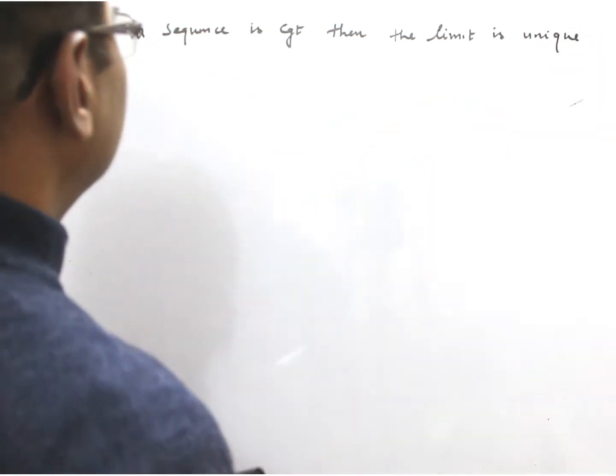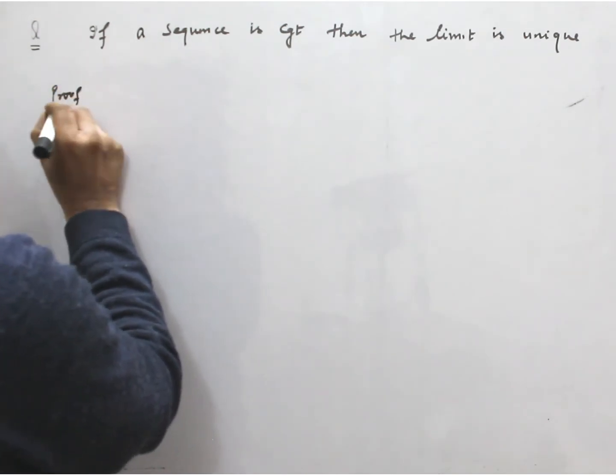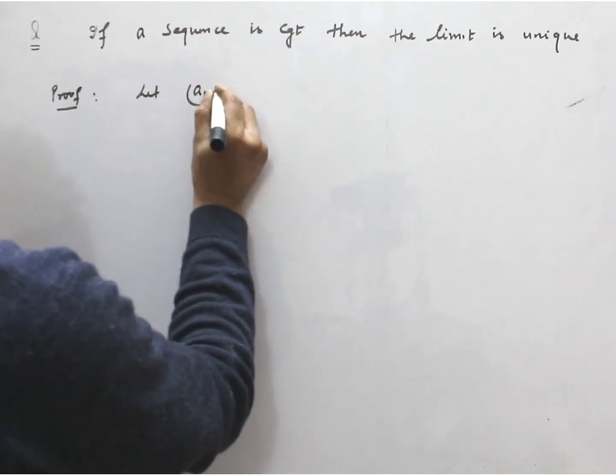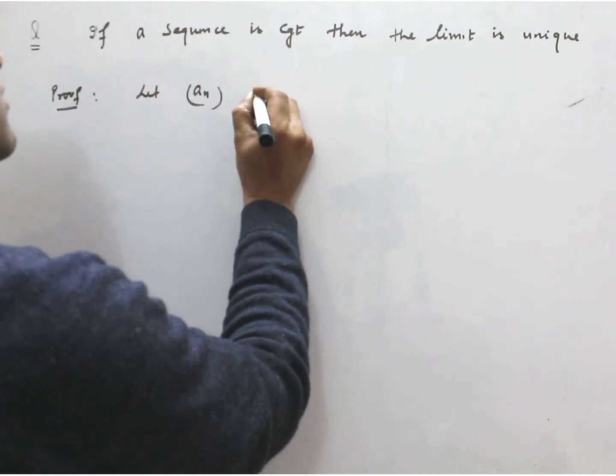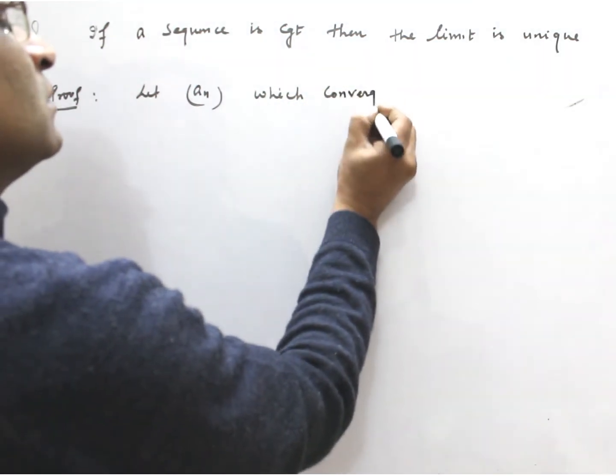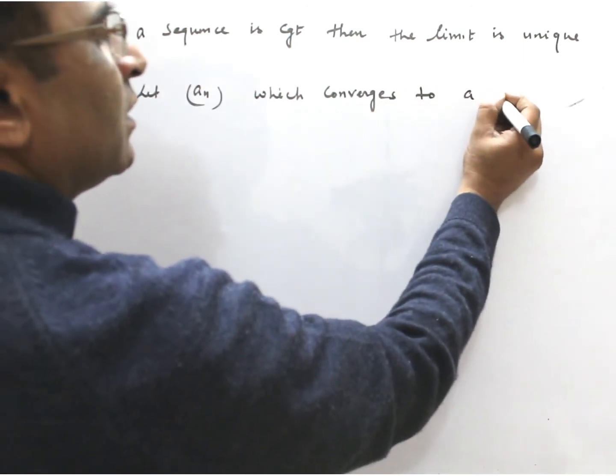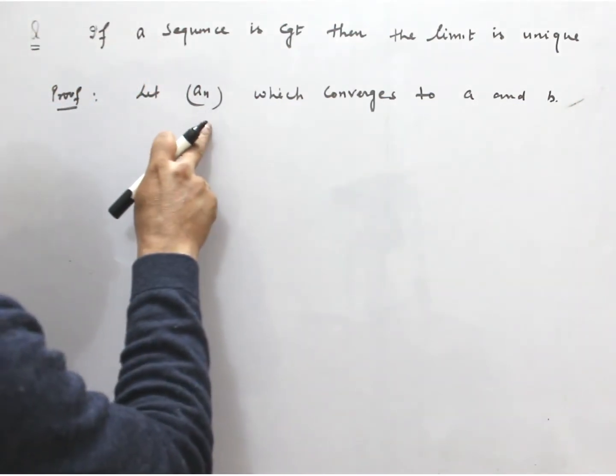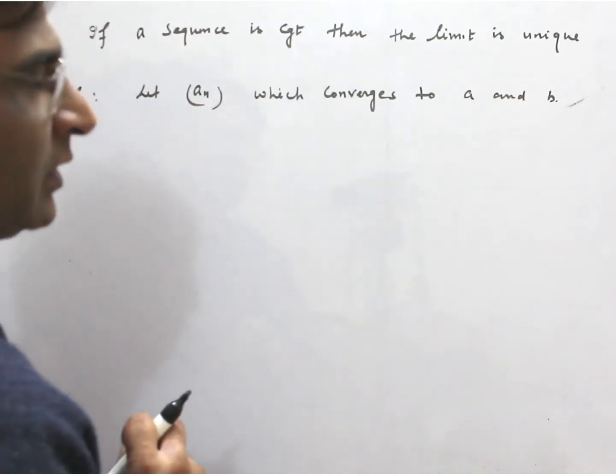Proof: Let (aₙ) be a sequence which converges to both a and b. So we are considering aₙ converges to a and b.